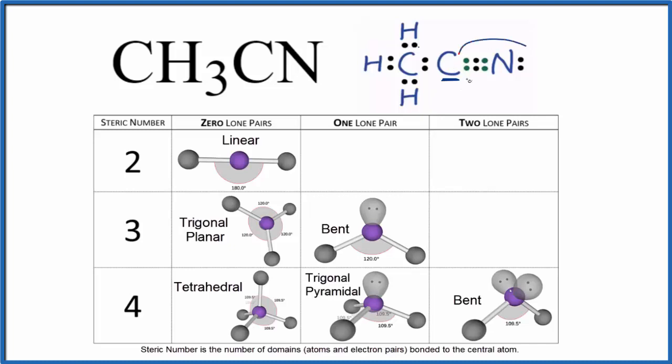We can use this table and look at steric number. This carbon is bonded to the nitrogen, and then it's bonded to this methyl group, CH3. So it's bonded to two things. There are no lone pairs. All the electrons are in chemical bonds, so zero lone pairs. For this carbon, it's linear with a bond angle of 180 degrees.